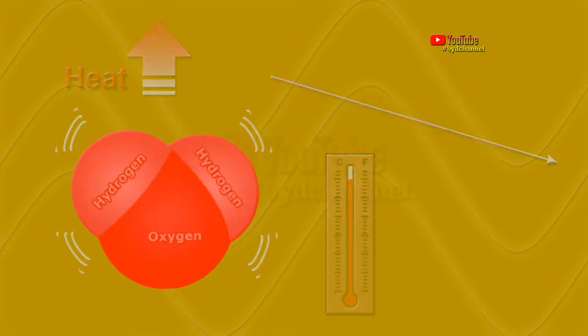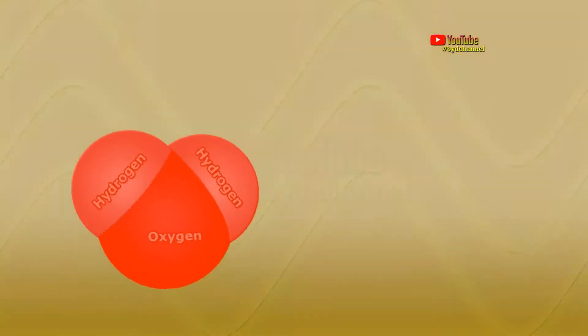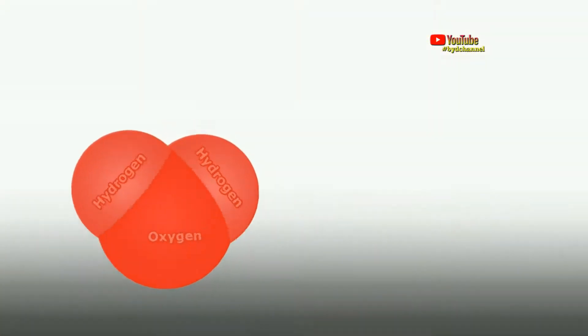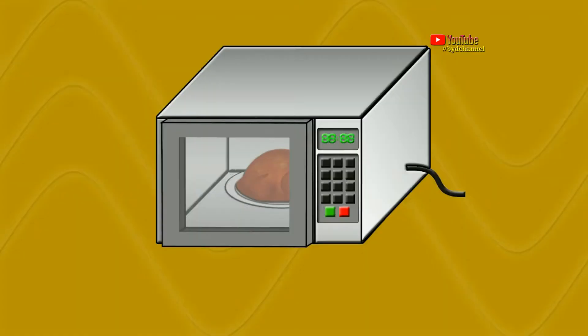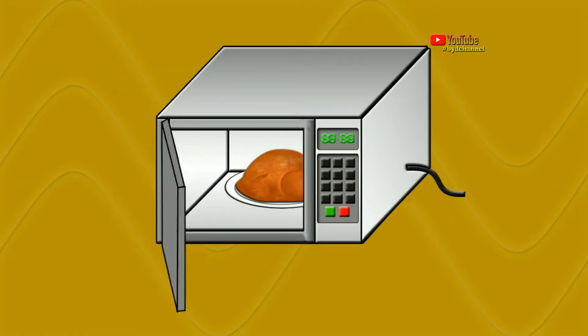Because most foods have large water content, microwaves can heat food quickly. That's the way microwave ovens work that we often use in our daily lives.